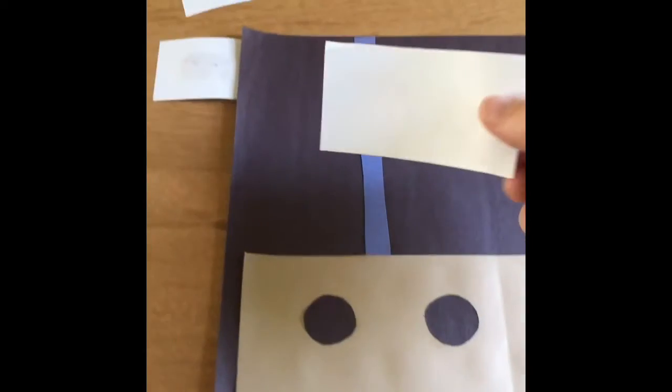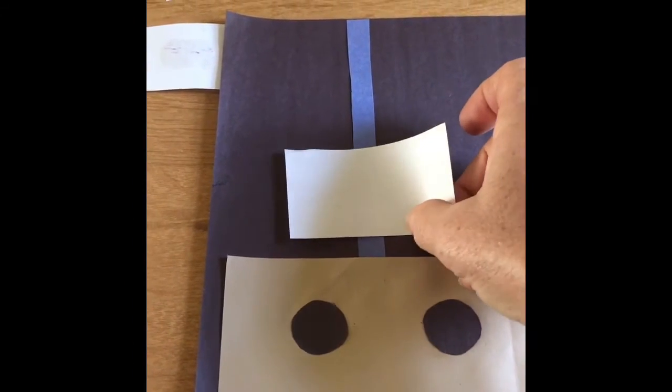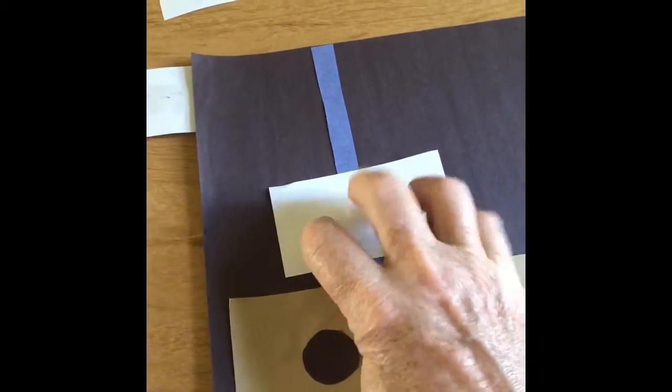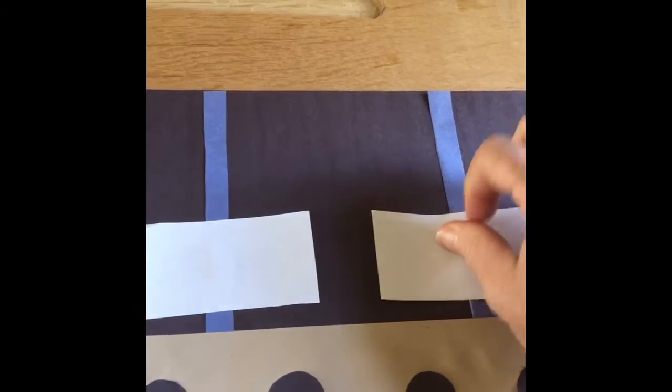And now we're going to apply the sails on the ship. What we're going to do is we're going to put the big one on the bottom. And we match them.